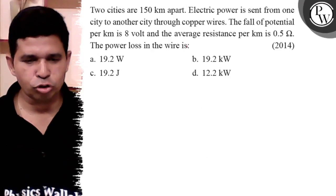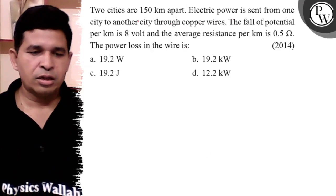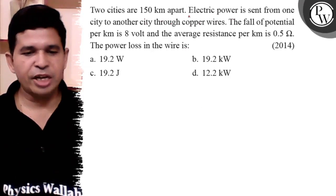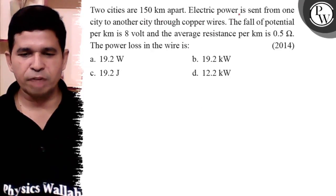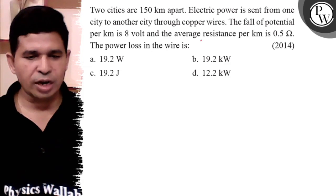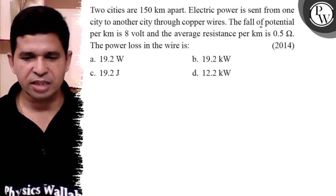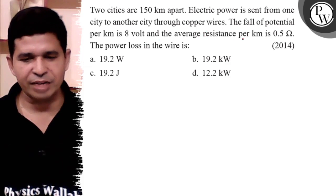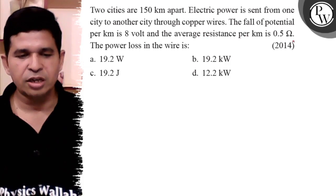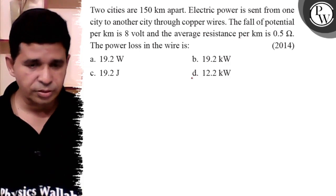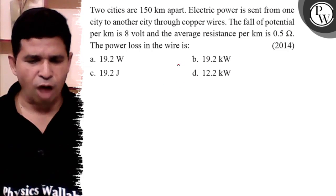Hello Bacho, let us see this question. Two cities are 150 km apart. Electric power is sent from one city to another city through copper wire. The fall of potential per kilometer is 8 volt and average resistance per kilometer is 0.5 ohm. The power loss in wire is: